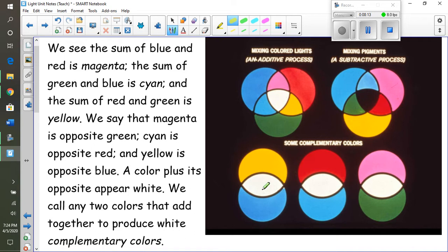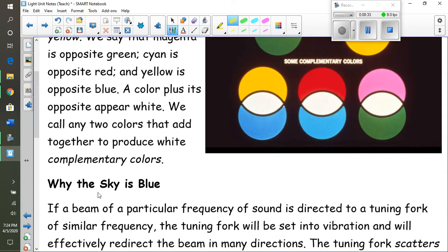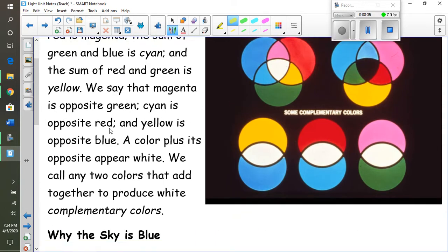Yellow and blue mixed together is going to make white. So a color plus its opposite makes white. We call any two colors that add together to produce white complementary colors. So there's something to kind of think of.